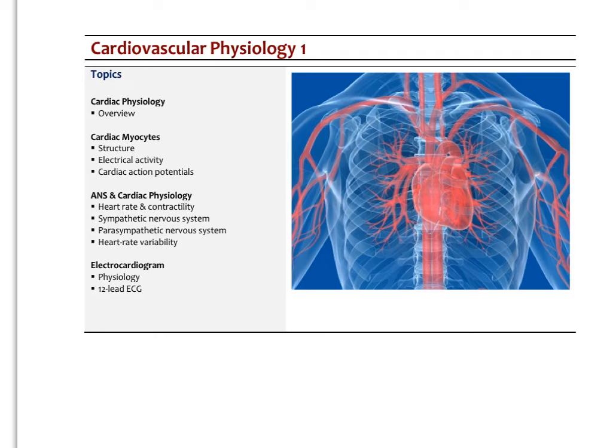In this first video on cardiovascular physiology, we'll review some of the basics of how cardiac myocytes function. We'll look at the different ion gradients across the myocyte, the different electrical activity they're capable of conducting, and then we'll look at the cardiac action potential. We'll delve into how the sympathetic and parasympathetic nervous systems can regulate the heart rate, and finally we'll end with a discussion of the electrocardiogram including the 12-lead ECG.